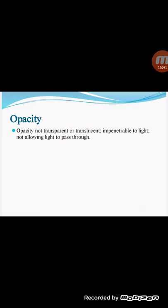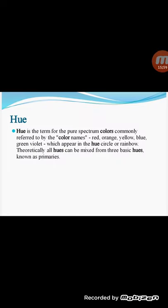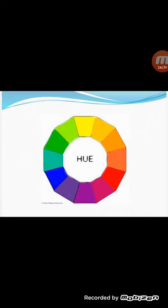Opacity: not transparent or translucent — impenetrable to light, not allowing light to pass through. Hue is the term for the pure spectrum colors, commonly referred to by color names — red, orange, yellow, blue, green, violet — which appear in the hue circle or rainbow. Theoretically, all hues can be mixed from three basic hues known as primaries. Hue is the specific name of a color; each color on the color wheel is a hue. Black, white, and gray do not appear on the color wheel because they have no hue.